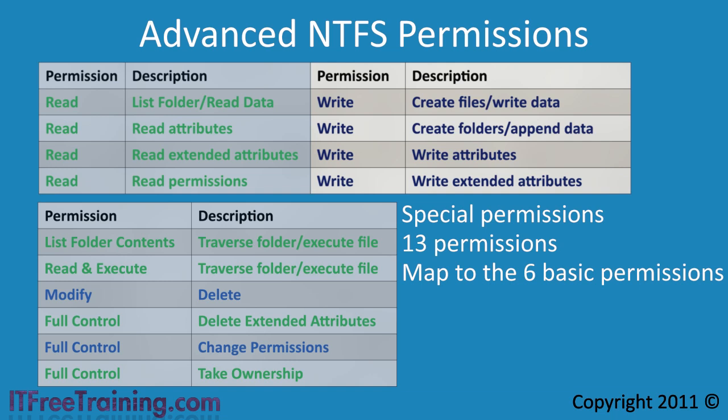The next permission is create folder append data. When applied at the folder level it allows the user to create new subfolders in that directory. When applied at the file level it allows the user to append data to the end of a file but not to change any existing data. If you had a log file that you wanted to ensure was not changed after it was written to, you would select this permission and clear the write data permission. The next permission is the write attributes permission, which allows the user to change the basic file attributes such as read only, hidden and archive.